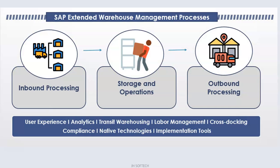In inbound processing, transportation unit processing, goods receipts, management and optimization are handled. For storage and operations: physical inventory, slotting, replenishment, and rearrangement are performed. Kit-to-stock management and value-added services have been introduced here. In outbound processing, we have outbound planning including route management, wave management, goods issue, pallet map planning, picking optimization, picking staging, and load management.